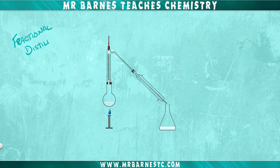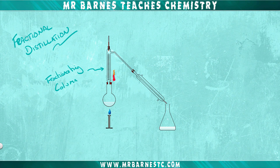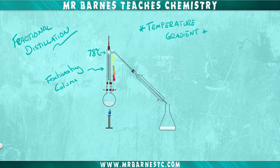So there is a more accurate way of producing concentrated ethanol, and that is fractional distillation. The only difference is you have a fractionating column, as you can see here, and this allows you to get a temperature gradient — hotter at the bottom, cooler at the top. Only when the top of the fractionating column reaches 78 degrees will the ethanol move into the condenser and turn back into a liquid.